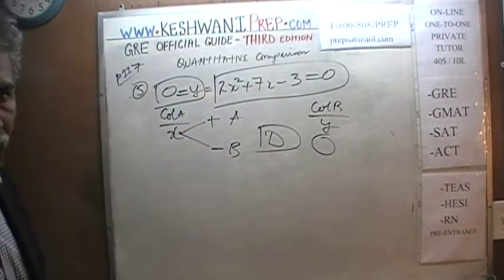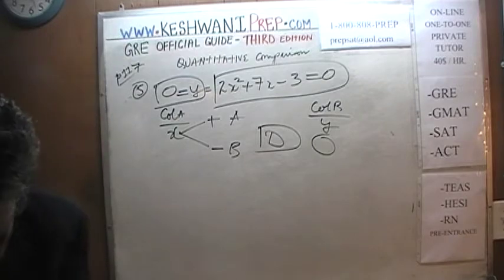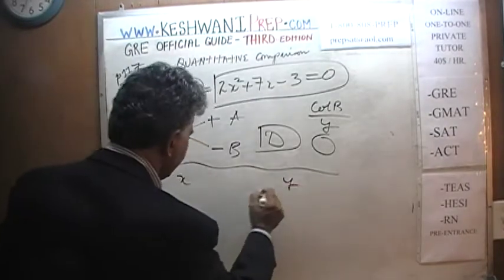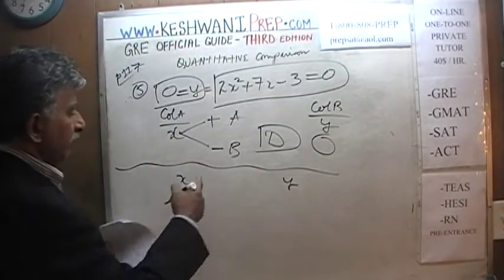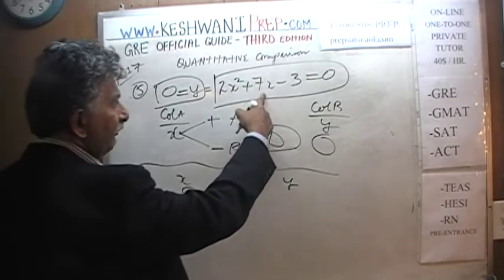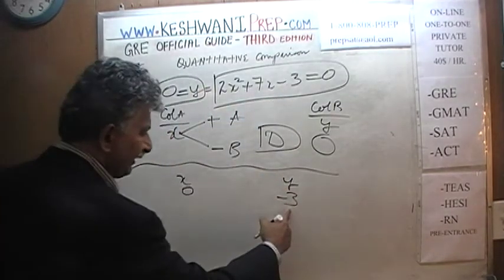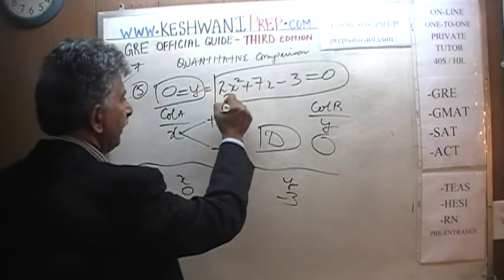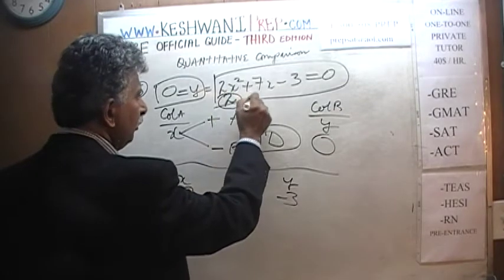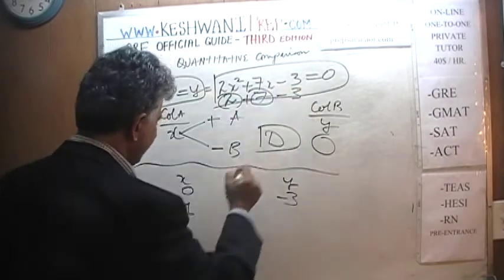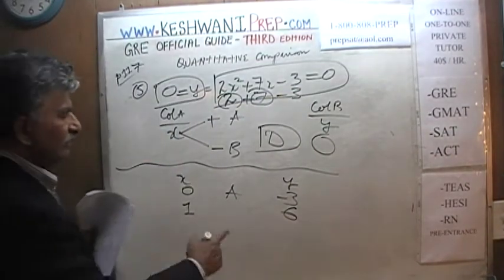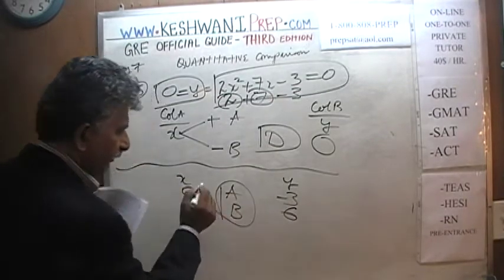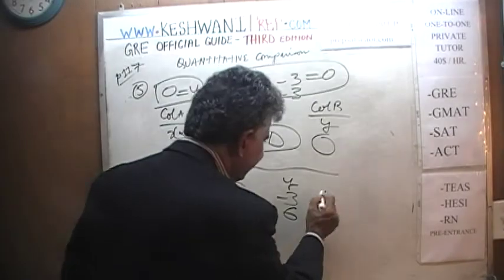If you don't like the theoretical approach, plug in numbers. If X equals 0: Y equals negative 3, so column B wins — answer is B. If X equals 1: Y equals 2 plus 7 minus 3, which equals 6, so column A is 1 and column B is 6 — answer is B again, wait — X is 1 and Y is 6, so B is larger. We're getting conflicting results across different plug-ins, so the answer is D.